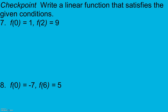We're going to write a linear function that satisfies the given conditions: f(0) equals 1 and f(2) equals 9. f of 0 means x equals 0 and y equals 1, since f of x is the same as y. So my first ordered pair is (0, 1). For the second condition, x is 2 and y equals 9. Now that we have our two ordered pairs, we're going to find our equation using slope-intercept form.